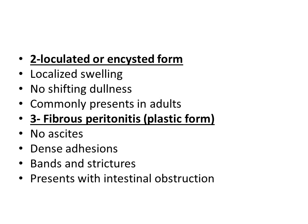The fibrous or plastic form of tubercular peritonitis: there is no ascites, but there are dense adhesions. Sometimes bands and strictures form, and it usually presents with intestinal obstruction, for which laparotomy will be needed.